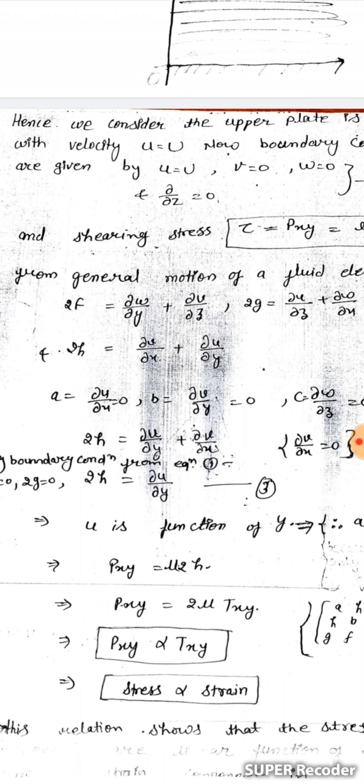From the general motion of a fluid element we write: 2f = delta w/delta y + delta v/delta z; 2g = delta u/delta z + delta w/delta x; and 2h = delta v/delta x + delta u/delta y. Also, a = du/dx, b = dv/dy, and c = dw/dz.